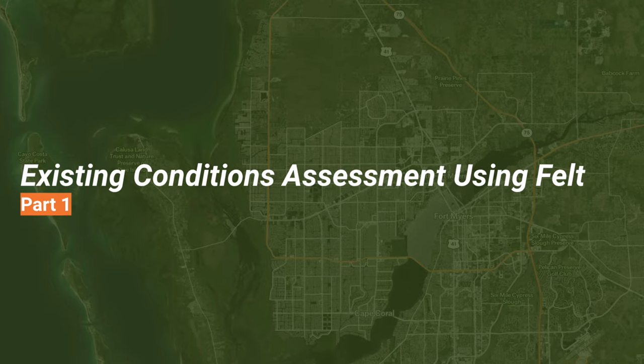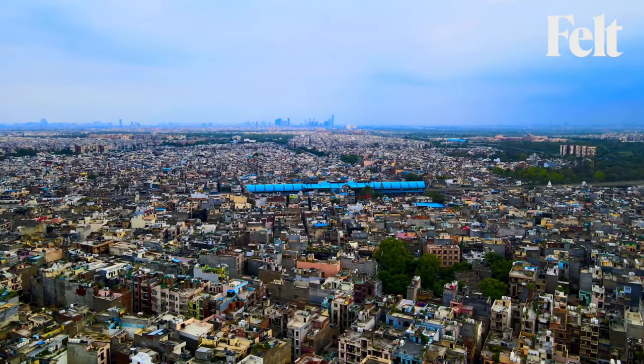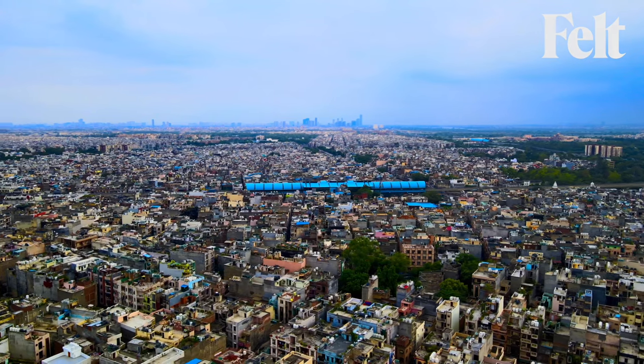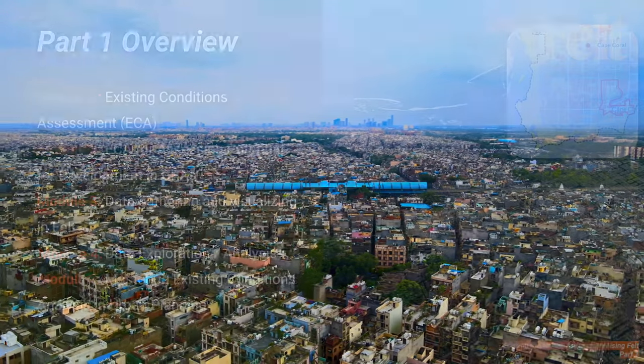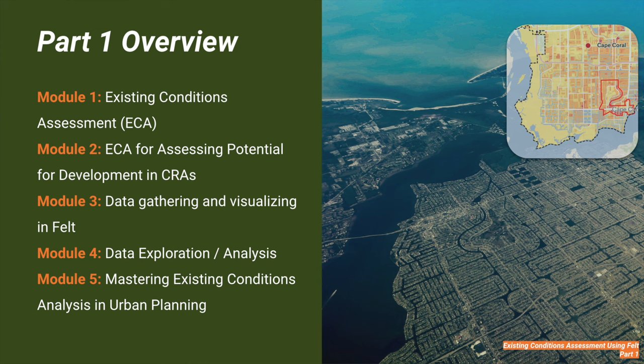Welcome to Part 1 of our AICP course series presented by FELT. Module 1 introduces you to the fundamentals of ECA, laying the groundwork for understanding urban environments and the potential for development. Module 2 focuses on applying ECA techniques to assess development potential in community redevelopment areas. Module 3 explores data gathering and visualizing in FELT, and Module 4 covers data exploration and analysis, delving into techniques for uncovering hidden patterns and trends within urban data.